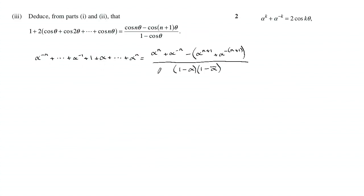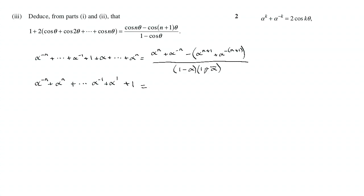Part three. This is what we concluded in part two, so let's see how we can apply the result of part one. We're going to group them like this: put alpha to the minus n with alpha to the n, and so on down to alpha to the minus one plus alpha to the one, and then also the one. On the right-hand side that gives 2cos(nθ) with k equals n, and then 2cos((n+1)θ).